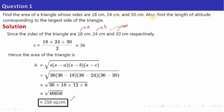Now let's read the second part of the question: find the length of altitude corresponding to the largest side of the triangle. The sides are 18, 24 and 30 — the largest side is 30. The altitude corresponding to 30 is drawn perpendicular to it. If this is the altitude — the height — then the base is 30.